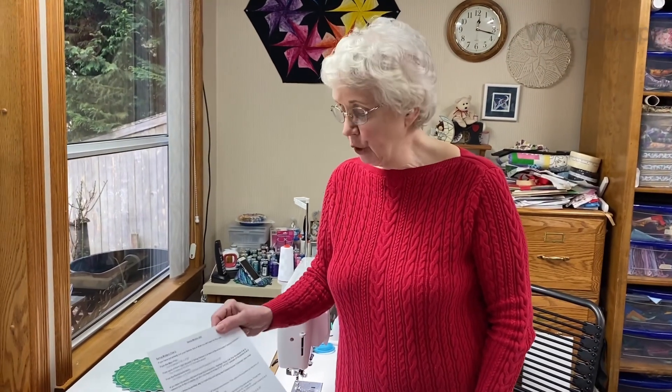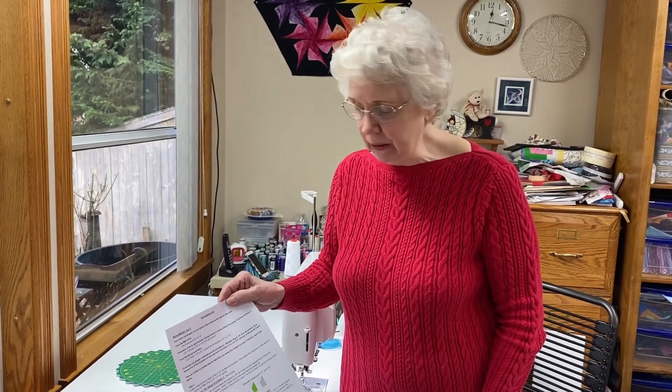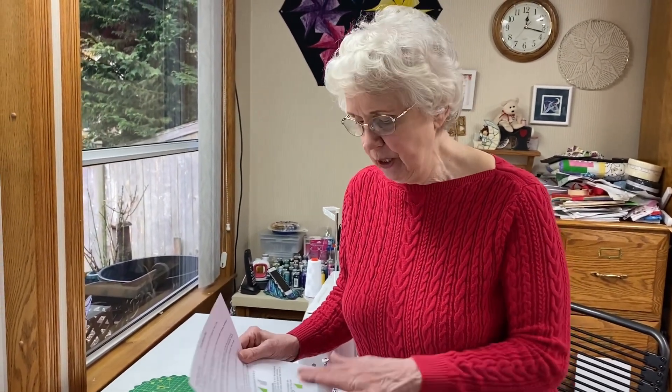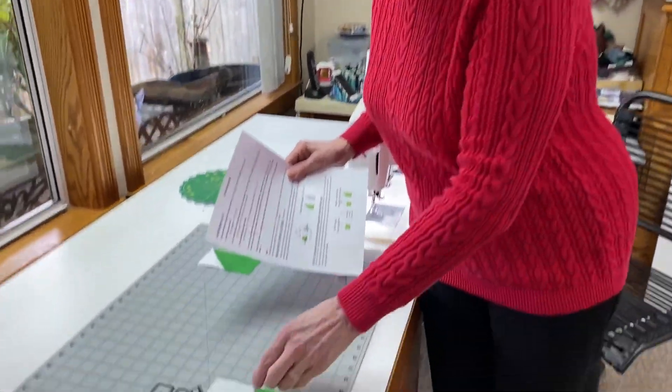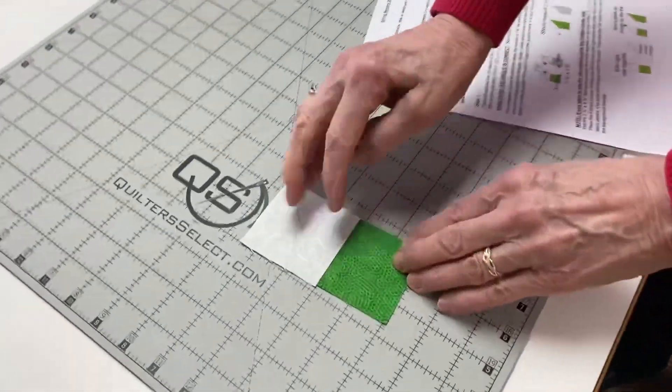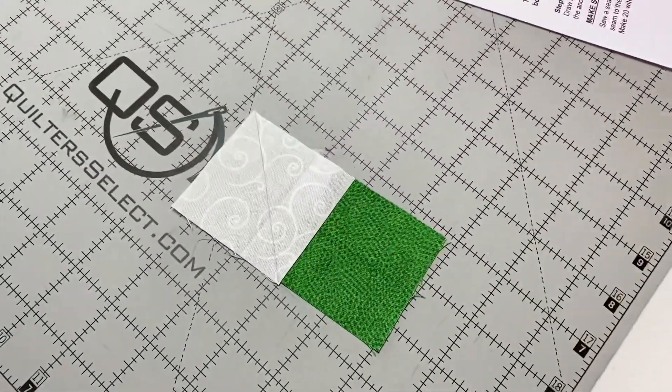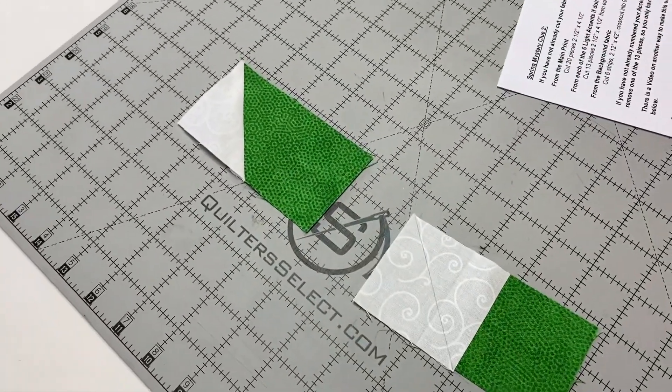Okay, hi there. We're back for clue two on our spring mystery quilt. This one we're doing a folded corner, which is a square on top of our rectangle here. We're going to sew diagonally, flip it back, and we get that unit there. So to me, that's called a folded corner.